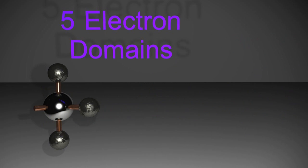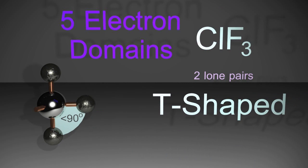Removing another atom, giving us two lone pairs, produces the T-shaped molecule and again slightly less than the expected 90 degrees due to the two lone pairs.